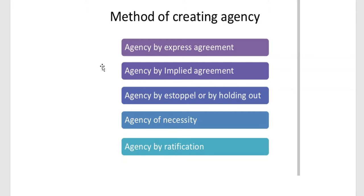Under Section 182 of the Indian Contract Act, an agent is defined as a person employed to do any act for another, or to represent another in dealings with a third person. The word 'another' here stands as the principal. When the question asks what is an agency or contract of agency, three things we have to write: essentials of agency, principles of agency, and the test of agency.